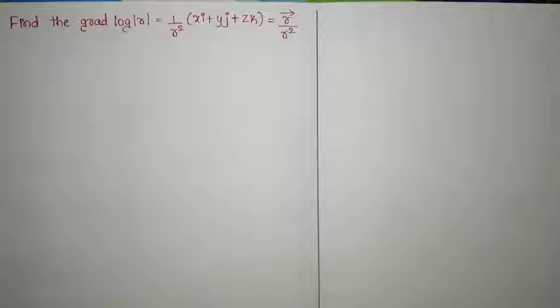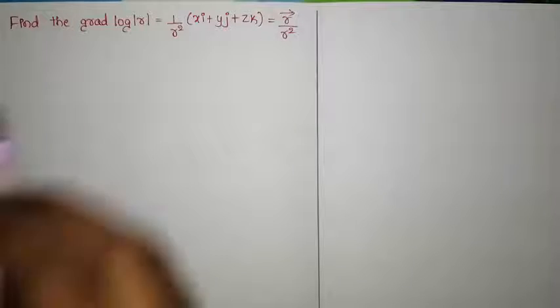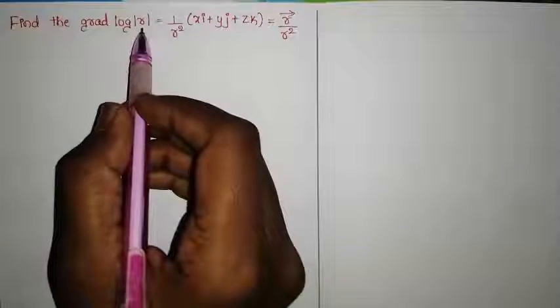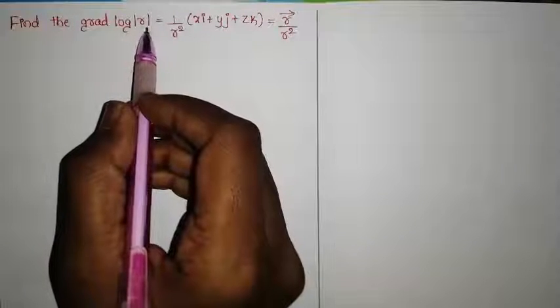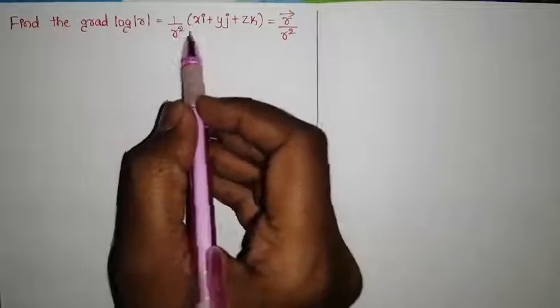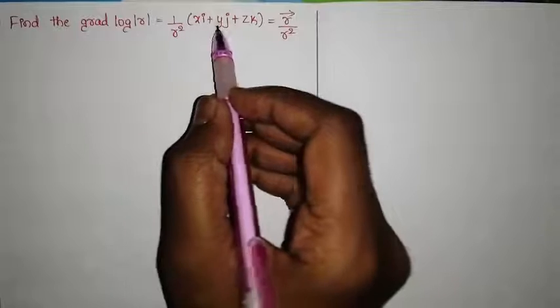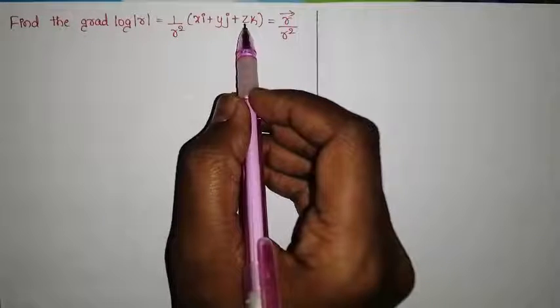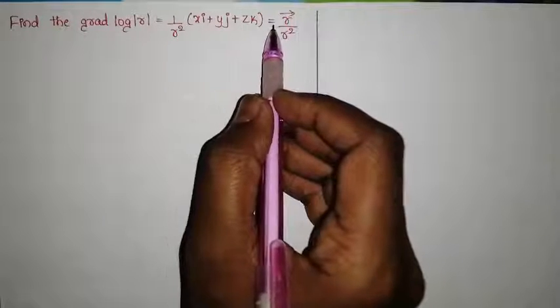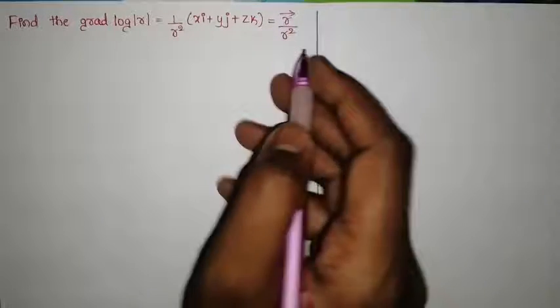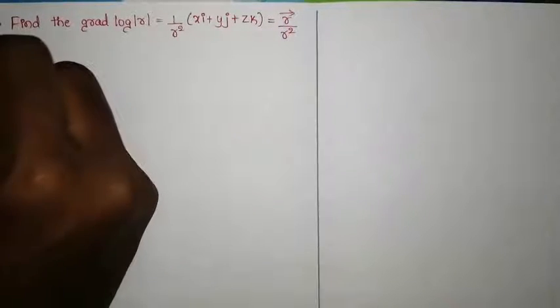Today we will solve some more examples on gradient, divergence, and curl. First, find the gradient of log|r|. The gradient of log|r| equals 1 divided by r squared into (xi + yj + zk), which can be written as vector r divided by r squared.